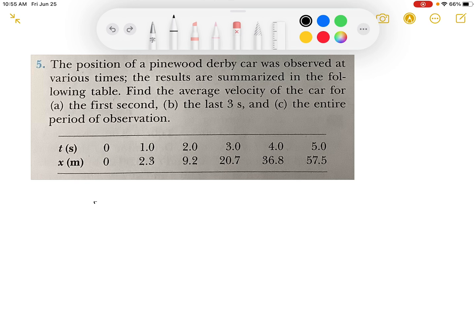For part A, we need to find the average velocity for the first second. We apply the formula: average velocity equals Δx over Δt.